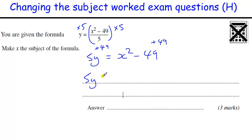Then we need to add the 49, we get 5Y plus 49 equals X squared, and then to undo the square, we take the square root of both sides. So the square root of X squared is just X, so we've got X equals the square root of 5Y plus 49.